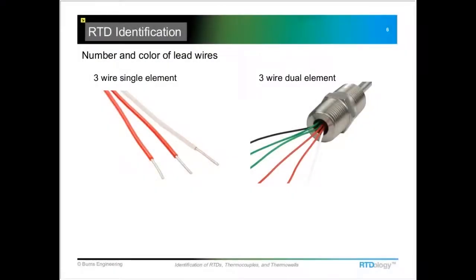The first thing to notice is what kind of lead wires are in it, count how many there are and what the colors are. So for a single element RTD, we have just typically two red leads and one white, and if it's a dual element there's going to be six wires, still going to have the two reds and a white being one sensing element, and green and black would be the other.